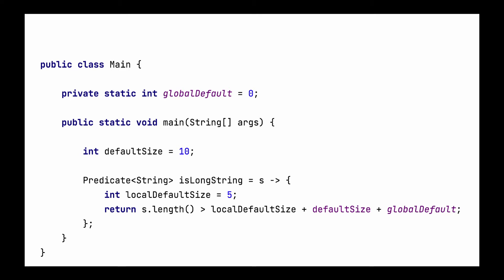Overall, a lambda body has read access to its parameters, to its local variables, and to variables outside of the lambda — whether in the method or even at the class level. Later in the video we will discuss about writing the value, and we will see what things are possible and how a lambda behaves when we want to write a variable.